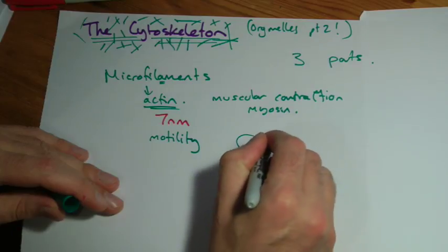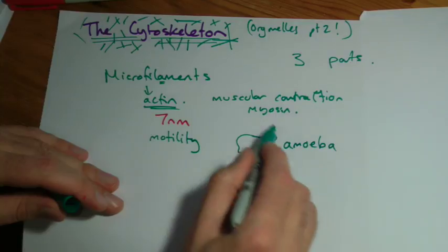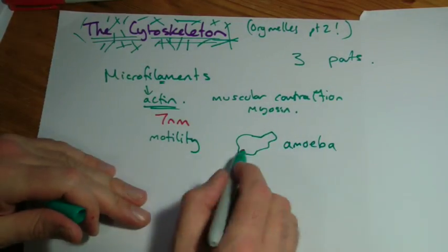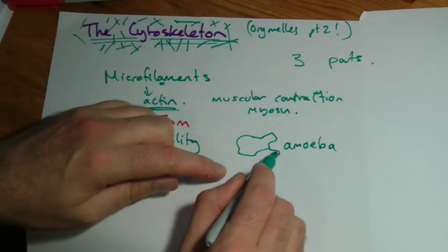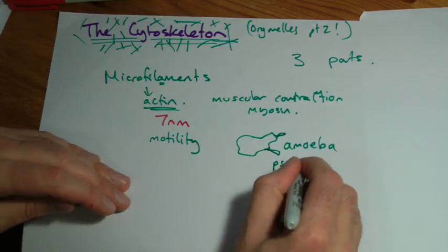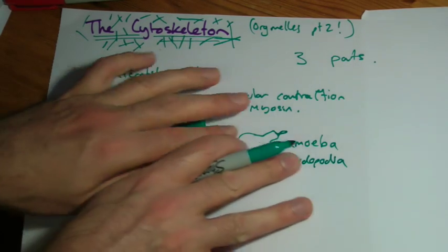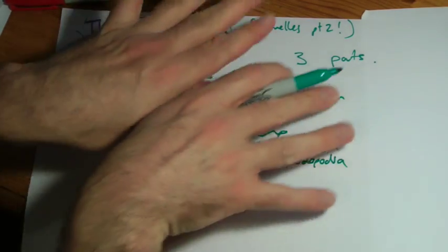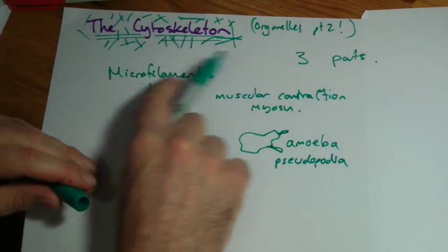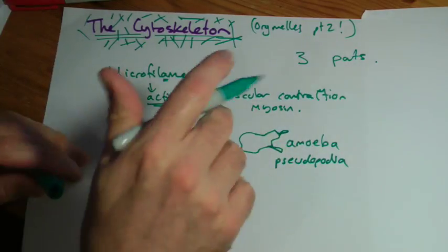Certain cells like amoebas, which are single celled organisms that move around and live in ponds, are actually predators. These little bits can come shooting out of them - it's actually the cytoplasm. These things are called pseudopodia, which means basically false feet, and they kind of creep along and move. That's what we mean by motility, that's caused by these microfilaments.